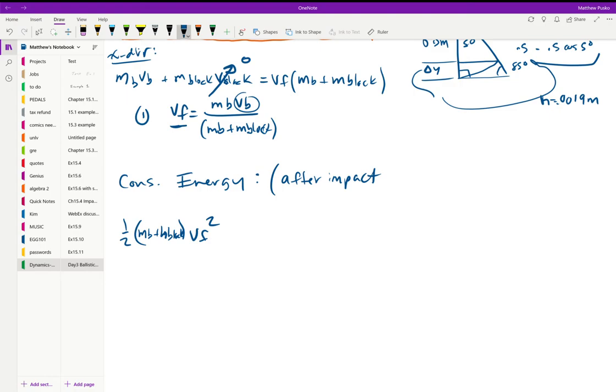And that's all going to turn into the gravitational potential, which is the mass of the bullet plus the mass of the block, because it's embedded in the system, times gravity times this delta y right there. So we can rearrange this and solve.